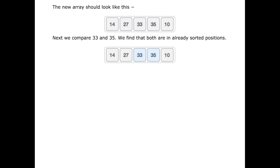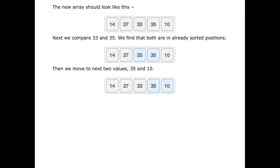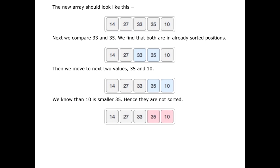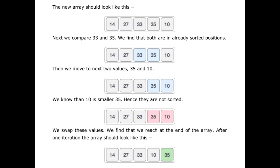We move on to the next set of values and can see they're already in the right position because 35 is greater than 33. We then move to the final two values, 35 and 10 — 10 is less than 35 so it's not in the right order. We swap these values and reach the end of the array. After one iteration, the array now looks like: 14, 27, 33, 10 and 35.